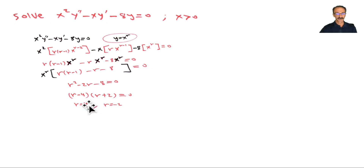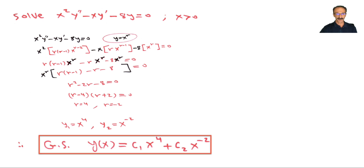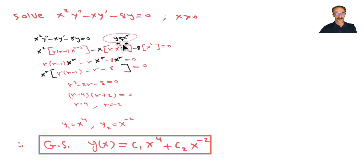Factoring out x^r, the inside simplifies to r² - 2r - 8 = 0. This gives two real distinct roots — Case 1 — so y₁ = x^4 and y₂ = x^(-2). The general solution is c₁x^4 + c₂x^(-2). The key element is identifying which case you have.